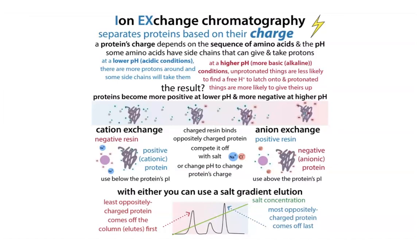In anion exchange, you have a negatively charged anionic protein — often called acidic — and a positively charged cationic resin. The protein is attracted to and sticks to the resin, while positively charged or uncharged things flow through. Adding high salt causes the chloride anions to compete off your protein — you exchange your anionic protein for the anions in the salt. You can also change the pH to alter the protein's charge, but typically we use salt because it's easier and less likely to cause issues with your protein.